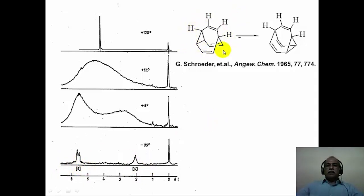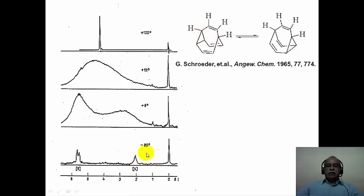Under frozen conditions where the rearrangement is considerably slowed down, NMR would see three different types of hydrogen in this molecule: one belonging to the cyclopropyl hydrogen, one to the vinylic hydrogen, and one to the methane CH hydrogen. The methane hydrogen and the cyclopropyl hydrogen accidentally merge, coming at the same delta value of about 2.1 ppm as a multiplet. All 6 vinylic hydrogens come together at around 5.8 ppm corresponding to 6 hydrogen intensity.